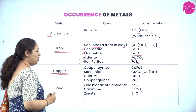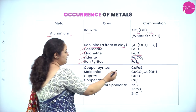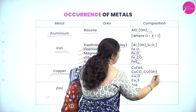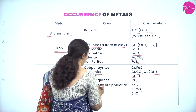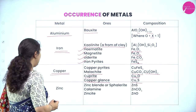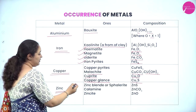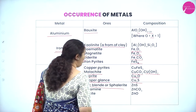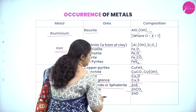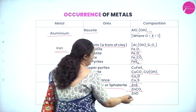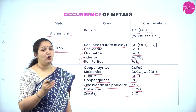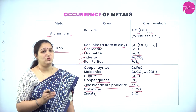Next metal is copper. Copper pyrites is CuFeS2, malachite is CuCO3·Cu(OH)2, cuprite is Cu2O, and copper glance is Cu2S. Last one is zinc metal, which is present as zinc blende or sphalerite — that is ZnS. Calamine is ZnCO3, and zincite is ZnO. These are the four metals whose occurrence you need to know, especially important for competitive exams.